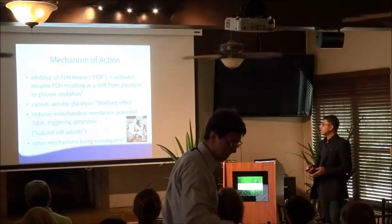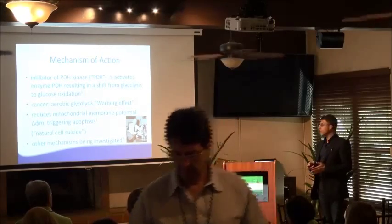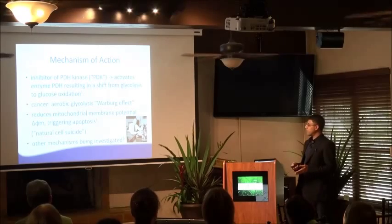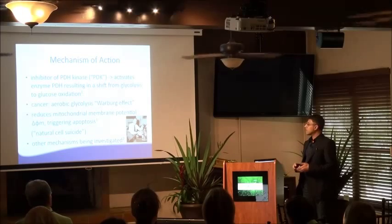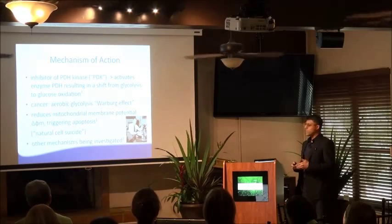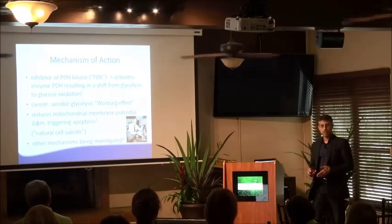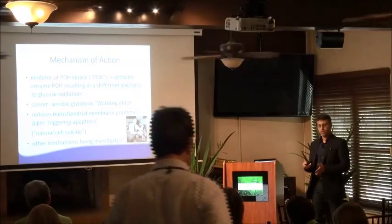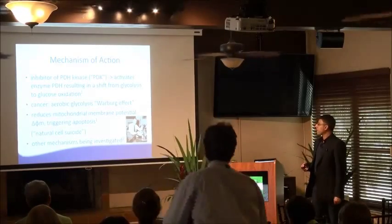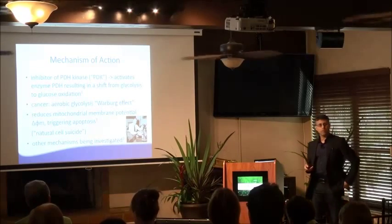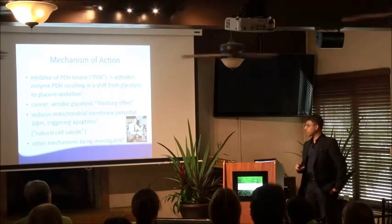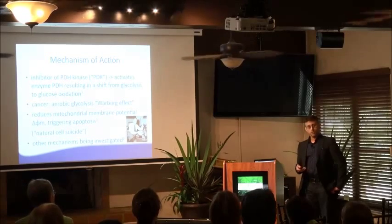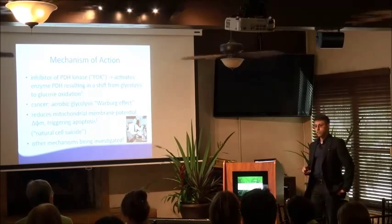There are other things that DCA does as well. It affects the voltage on the mitochondrial membrane — called delta psi M, or mitochondrial membrane potential — and by reducing that voltage, it starts the cascade of natural cell suicide, called apoptosis. So DCA also triggers natural cell death, and that's only in the cancer cell, not in your good cells, because they're already undergoing apoptosis as an ongoing process. There are other mechanisms too: it may be anti-angiogenic, blocking the growth of blood vessels in tumors, and it may alkalinize the tumor microenvironment, though nothing definitive yet on that.